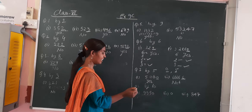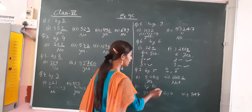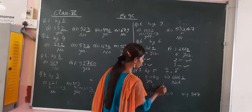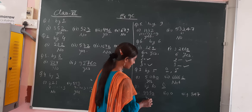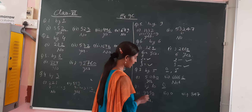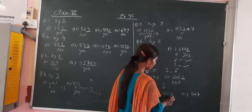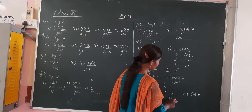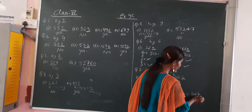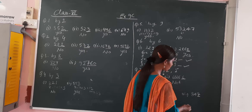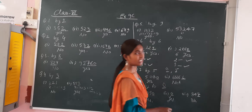Now, by 10. For 10 also, the unit place digit should be 0. Now see — here it is 0, so yes it is divisible by 10. Here is also 0 — yes, it is divisible by 10. Here, the unit place digit is not 0, so it is not divisible by 10.